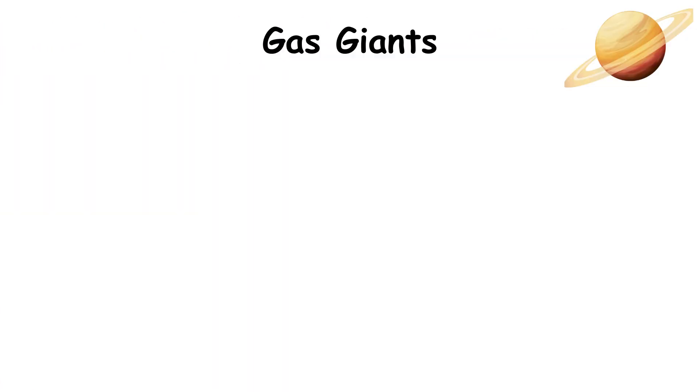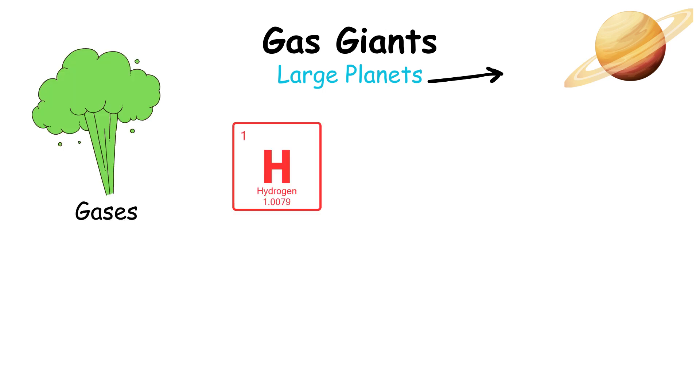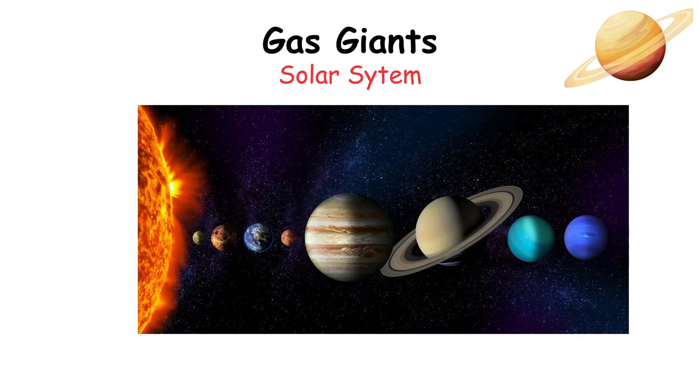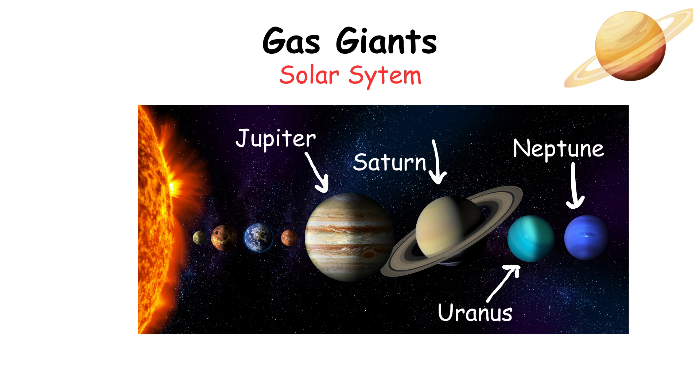Gas giants are large planets composed mostly of gases, such as hydrogen and helium, with a relatively small rocky core. The gas giants of our Solar System – Jupiter, Saturn, Uranus, and Neptune – together make up a group known as the Jovian planets.